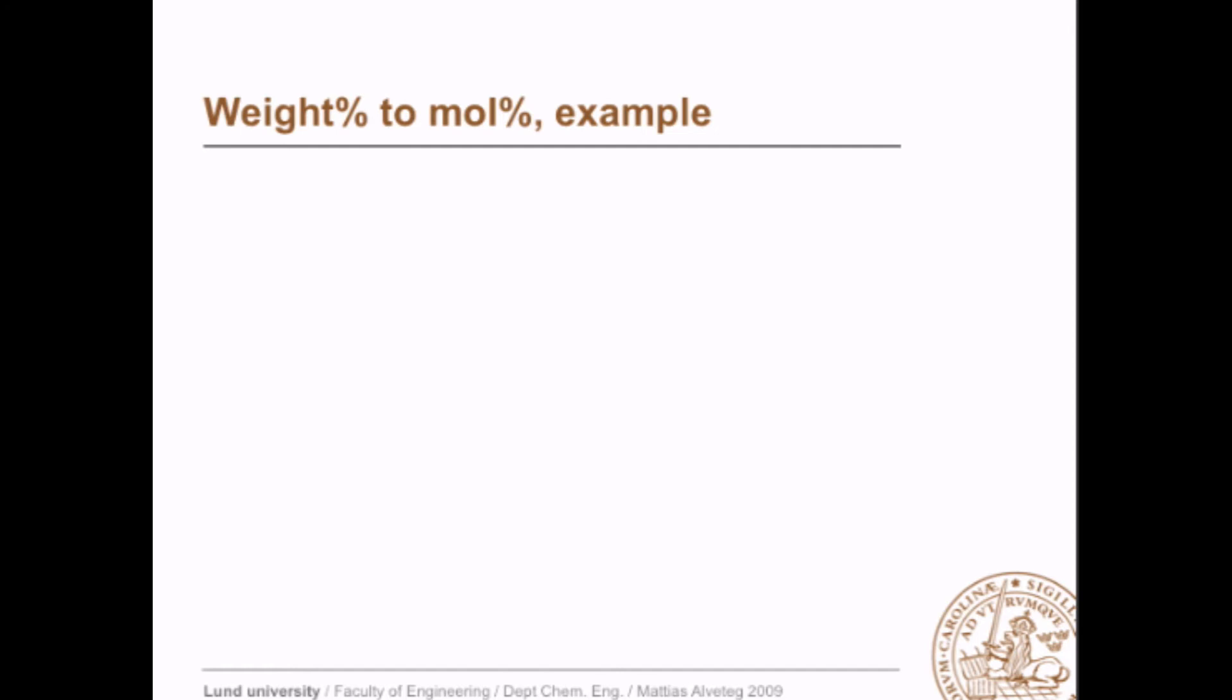The second example, going from weight percent to mole percent. Given 40 weight percent of A and thus 60 of B and the same molar masses, 50 for A and 18 g per mole for B.